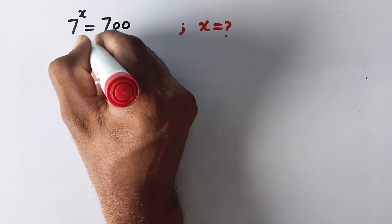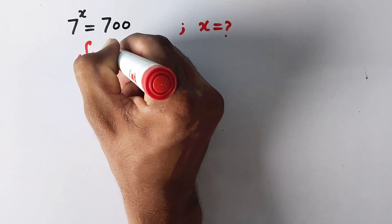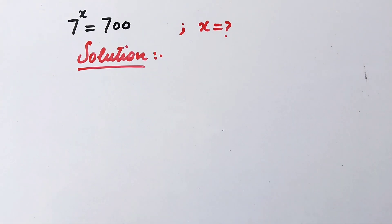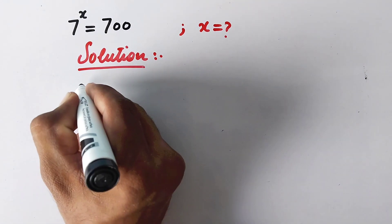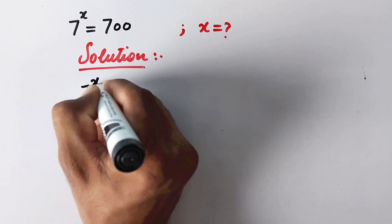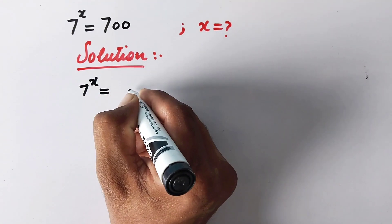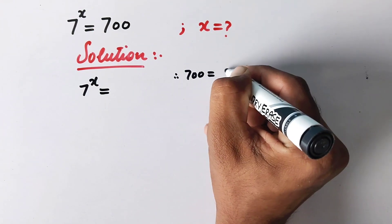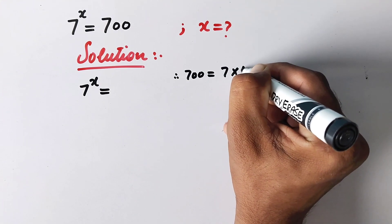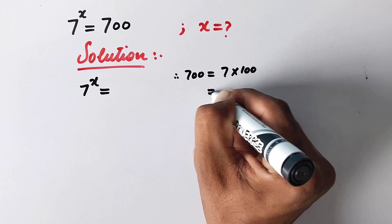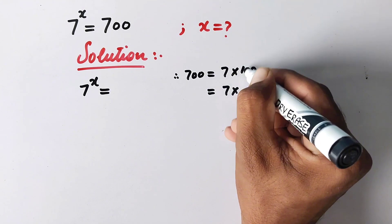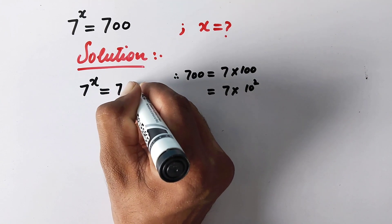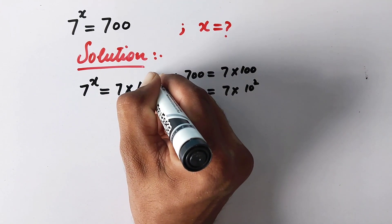Let us see the solution. So here in first step, we will write 7 raised to power x is equal to—this 700 is same as 7 multiplied by 100, and 7 multiplied by this 100 is same as 10 squared. So here we will write 7 multiplied by 10 squared.